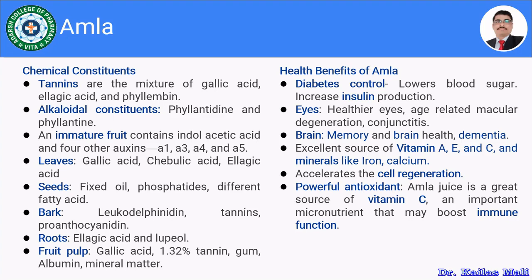The immature fruit of Amla comprises indoleacetic acid and four other oxines: A1, A3, A4, and A5. The leaves comprise gallic acid, chebulic acid, and ellagic acid. The seeds comprise fixed oil, phosphatides, and different fatty acids. The bark comprises leucodelphinidin, tannins, and proanthocyanidins. The root comprises ellagic acid and lupeol. The fruit pulp comprises gallic acid, 1.32% tannin, gum, albumin, and mineral matter.